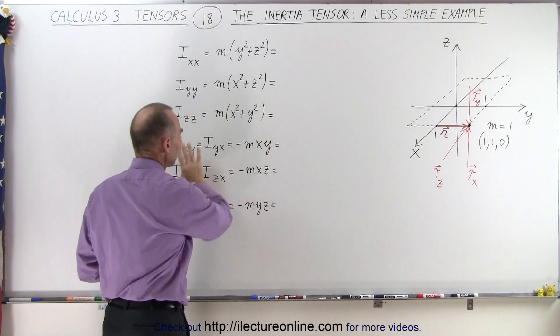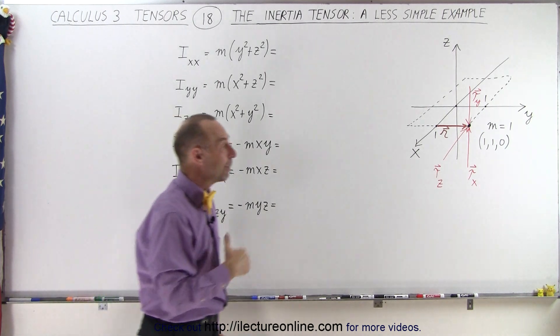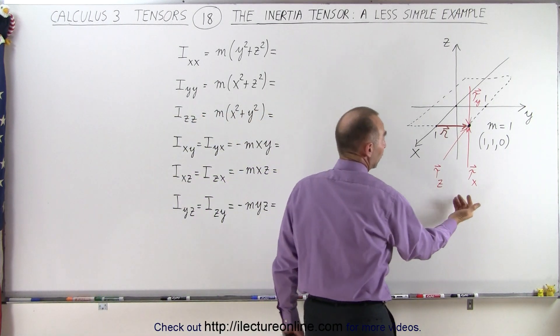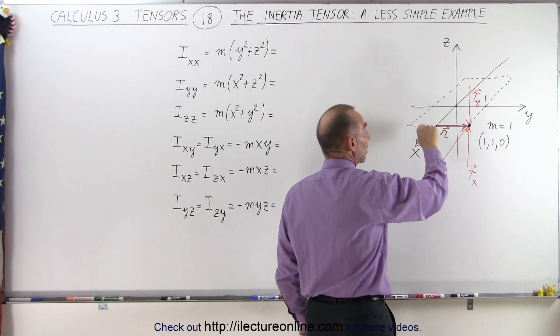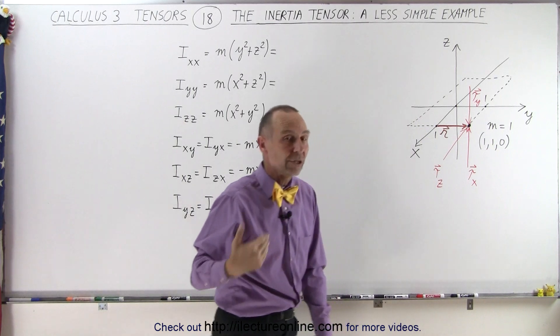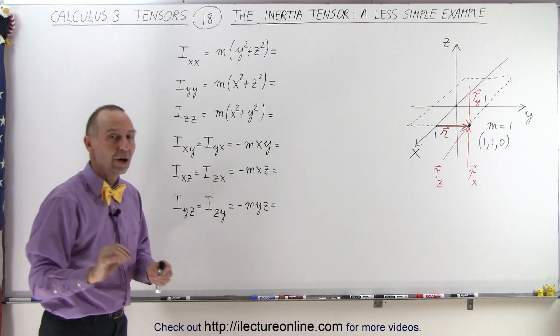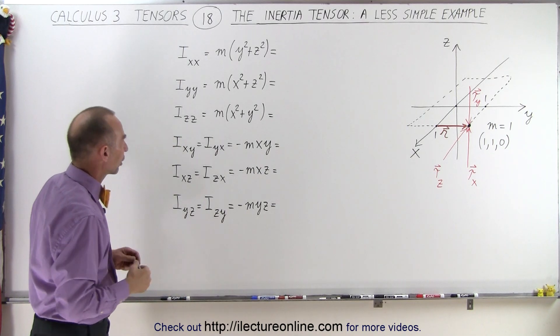We also will be looking for the cross elements, because if any one of those are not equal to 0, that means that by applying, let's say, a torque for an angle acceleration in the x-direction, it could potentially also provide a torque around one of the other axes. So that's going to become clearer if any of the off-diagonal elements are not equal to 0. So let's take a look.